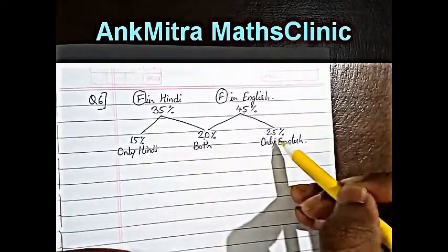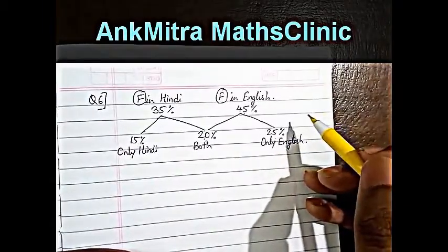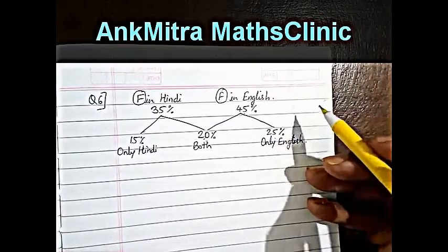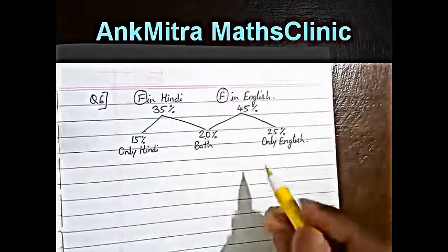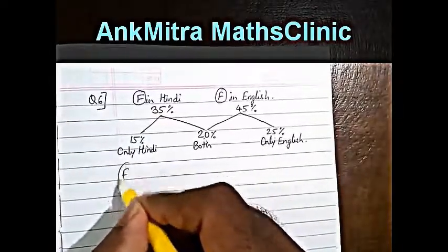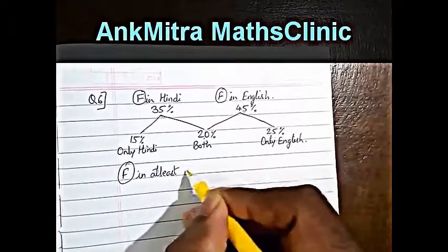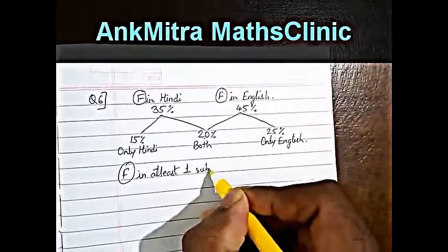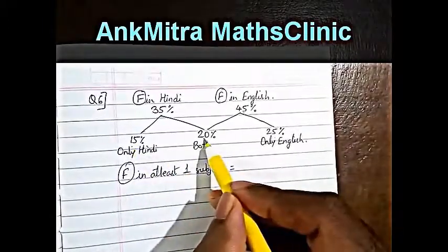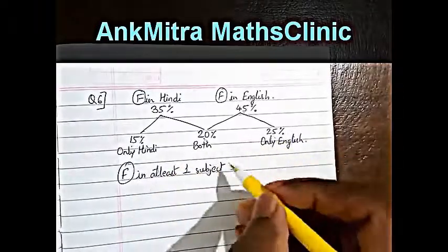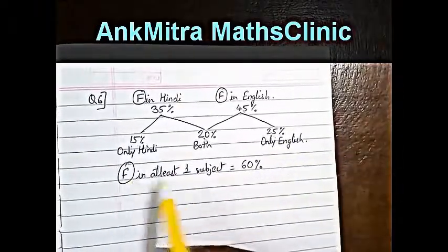So if we want to find the percentage of students which failed in at least one subject, at least one subject will be the addition of these three values. So failed in at least one subject will be 15% plus 20% plus 25%, so the total comes to 60%.